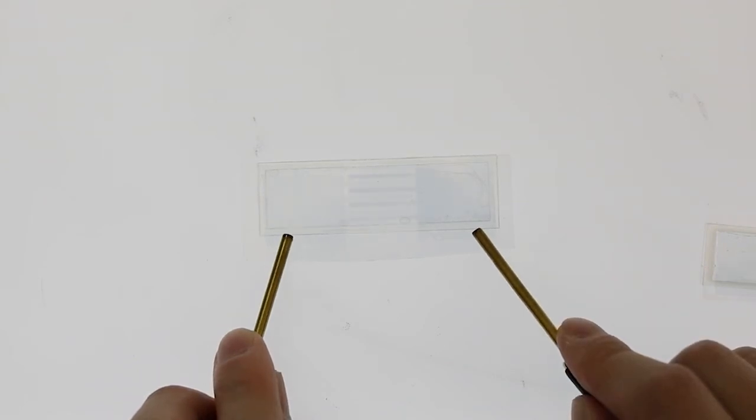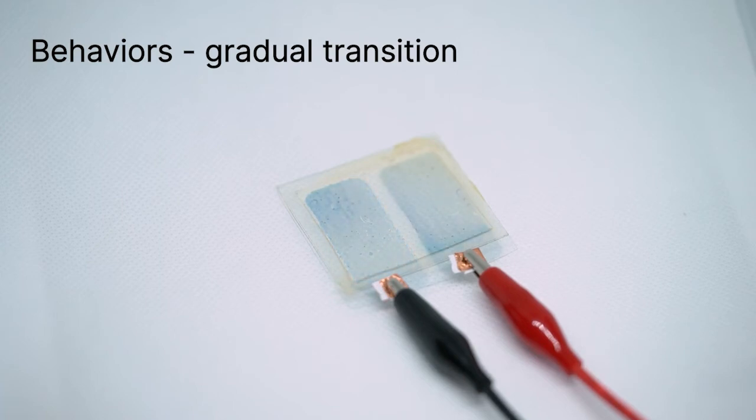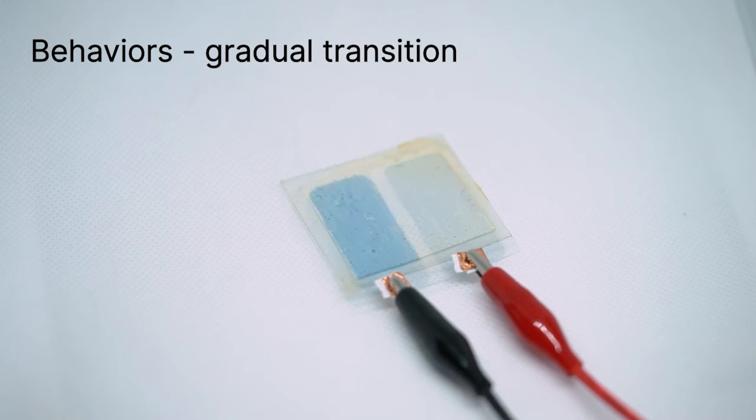Now, let's take a look at the different behaviors that the previously discussed design primitives can afford. The gradual transition behavior informs designs where immediate attention may not be necessary but slow realization is appropriate.